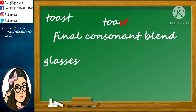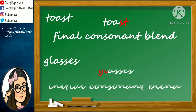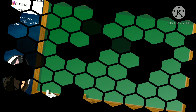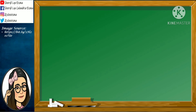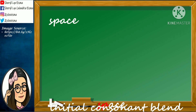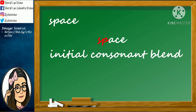Number 4: Glasses. Good job! The word 'glasses' has an initial consonant blend. Number 5: Space. Excellent! The word 'space' has an initial consonant blend.